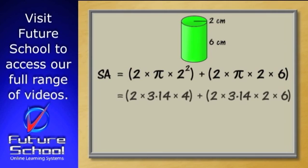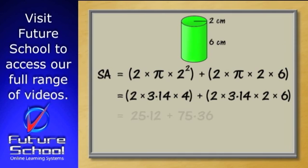This gives us two times three point one four times four plus two times three point one four times two times six. Work this out on the calculator and we get twenty five point one two plus seventy five point three six, which equals one hundred point five centimetres squared.